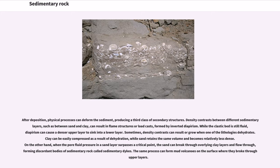After deposition, physical processes can deform the sediment, producing a third class of secondary structures. Density contrasts between different sedimentary layers, such as between sand and clay, can result in flame structures or load casts, formed by inverted diapirism. While the clastic bed is still fluid, diapirism can cause a denser upper layer to sink into a lower layer. Sometimes density contrasts can grow when one of the lithologies dehydrates. When the pore fluid pressure in a sand layer surpasses a critical point, the sand can break through overlying clay layers and flow through, forming discordant bodies of sedimentary rock called sedimentary dikes.